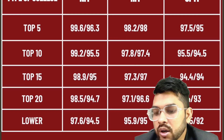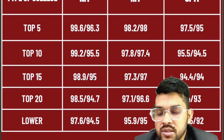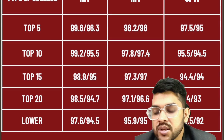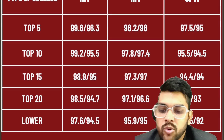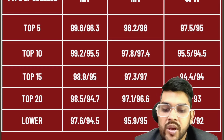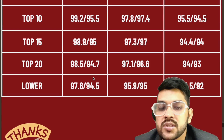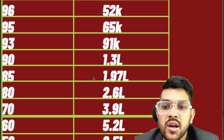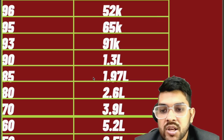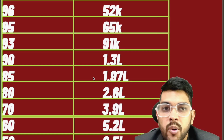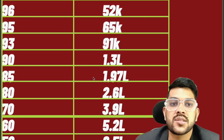For lower-ranked NITs — meaning North Eastern NITs — 97.6 percentile for CSE and 94.5 for lower branches. For IIITs in this range: 95.9 for CSE and 95 for lower branches. For GFTIs: 93.5 for CSE and 92 percentile for lower branches. This was the complete information regarding general category cutoffs. Please subscribe to the channel so you get everything at the right time about JEE Mains, JEE Advanced, and other entrance exams. Thank you.